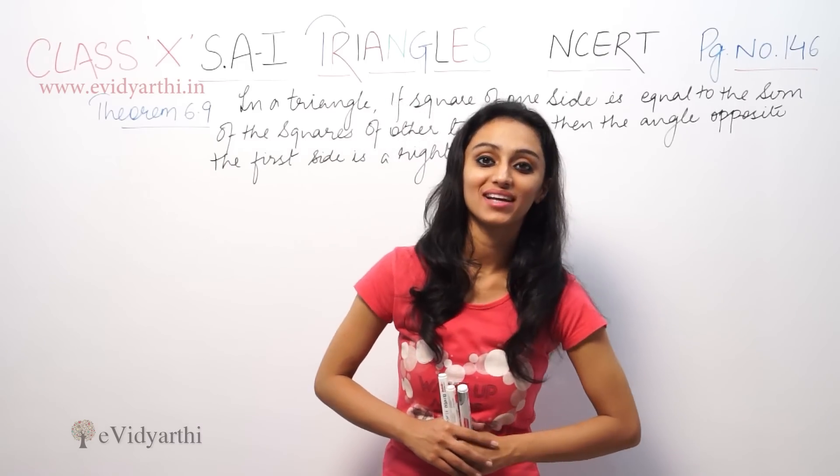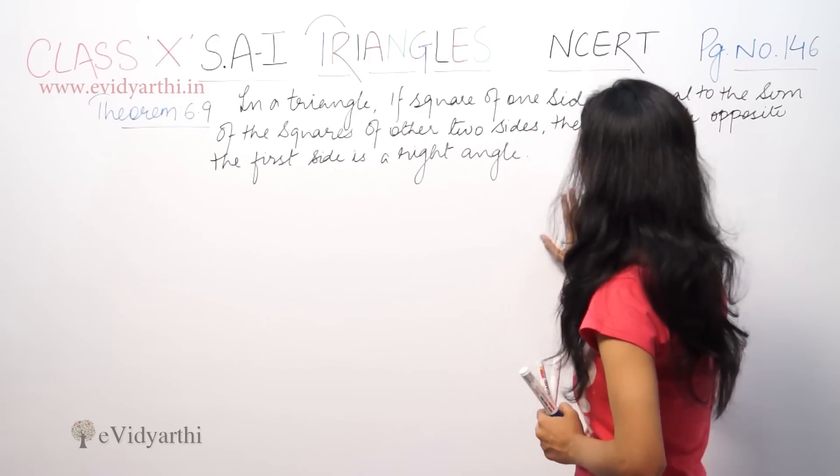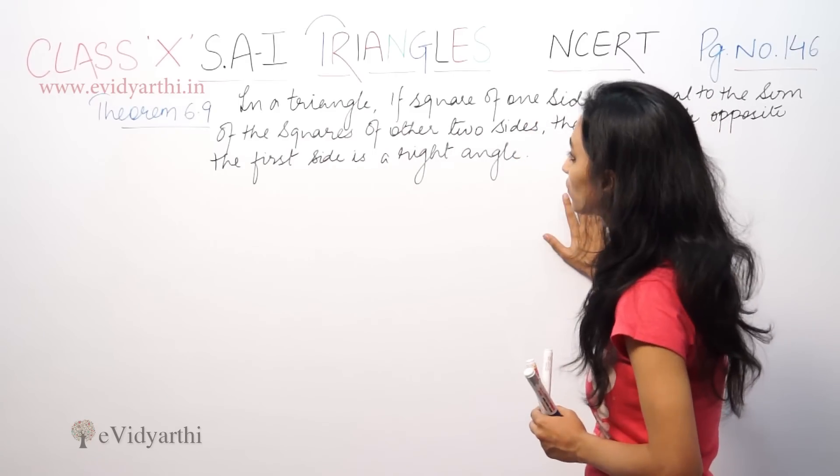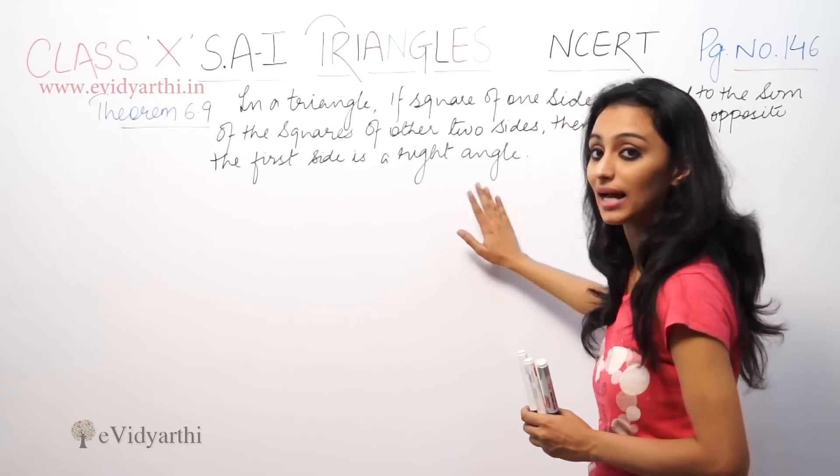Hi, this is the Converse theorem on triangles. It's based on: in a triangle, if square of one side is equal to sum of the squares of other two sides, then the angle opposite to the first side is a right angle.